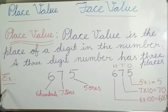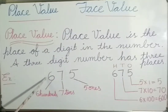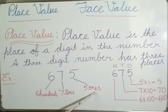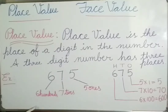Take the example 675. This is a 3-digit number. It has 5 ones, 7 tens, and 6 hundreds.